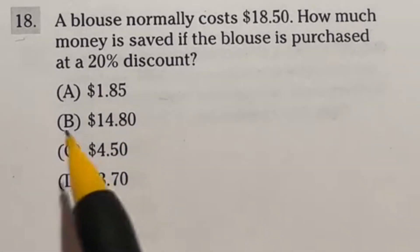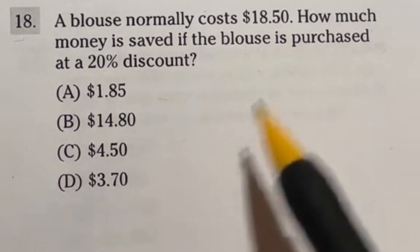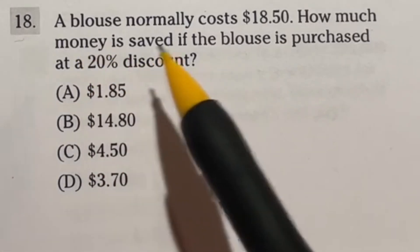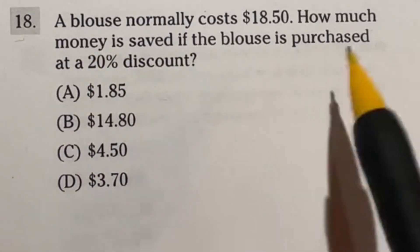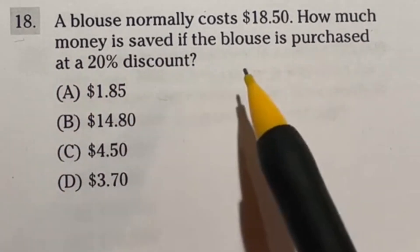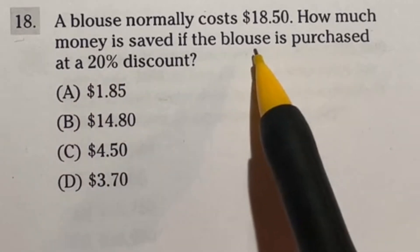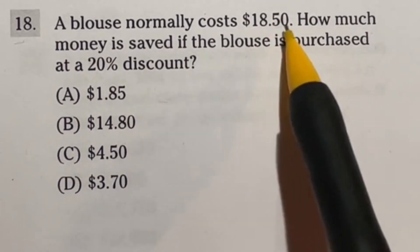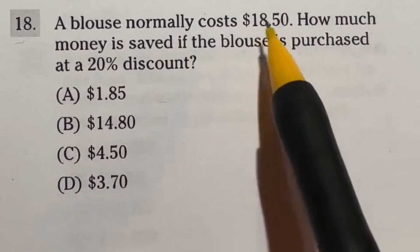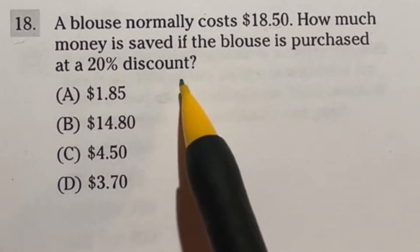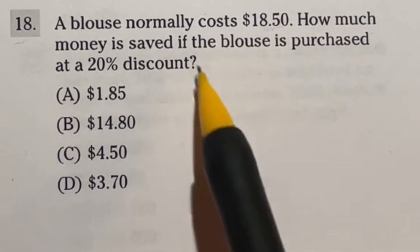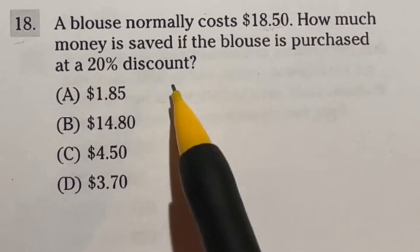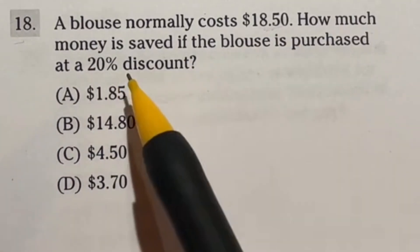Number 18 on the ASVAB is a perfect example of different shortcuts you can take while taking this test. It says a blouse normally costs $18.50. How much money is saved if the blouse is purchased at a 20% discount? When you're dealing with percents, if you want to know 80% of this guy you multiply by 0.80. If you want to know 20% you multiply by 0.20. There's also shortcuts within that to deal with as well.